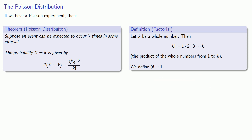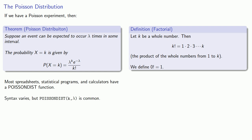For the most part, we're not going to calculate the Poisson probability by hand. Most spreadsheets, statistical programs, and calculators have something called a Poisson dist function. The syntax varies, but Poisson dist(k, lambda) is common.